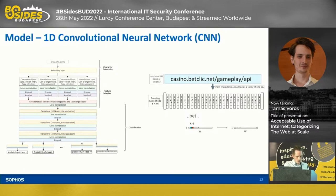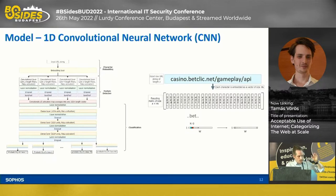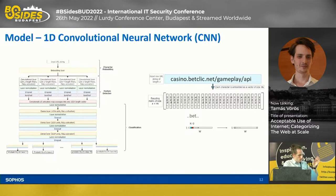Characters with similar roles are mapped to similar numeric representations. This makes the model more robust to obfuscation attempts — for example, if someone just types more numbers at the end of the URL. The most interesting part of the model is the feature detection part, which consists of 1D convolutional layers. What a convolutional layer does on a high level: it operates a sliding window on top of an input. Strings are fundamentally one-dimensional.